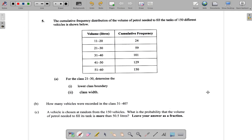Now, the question is, a vehicle is chosen at random from the 150 vehicles. What is the probability that the volume of petrol needed to fill the tank is more than 50.5 litres?